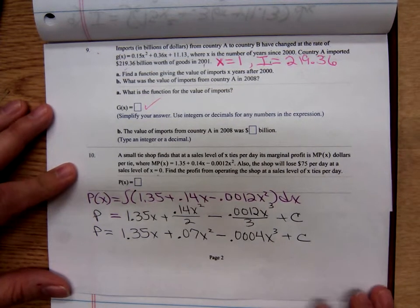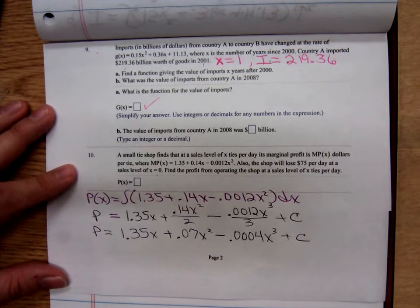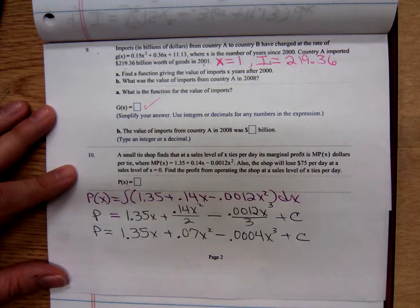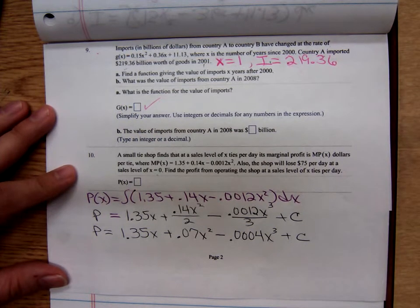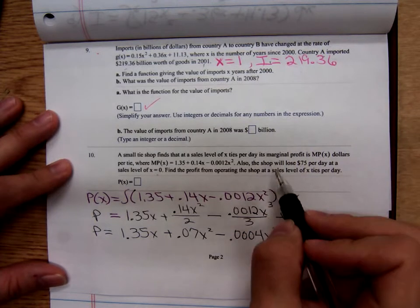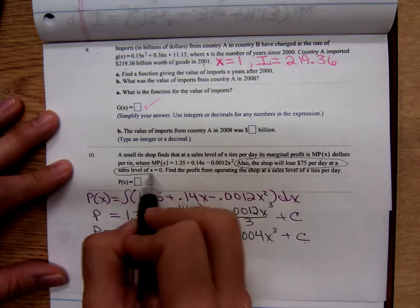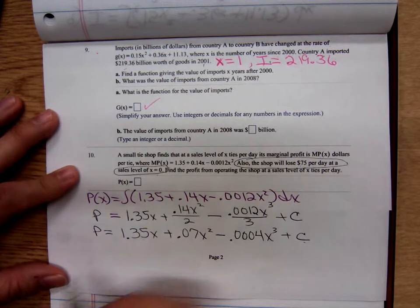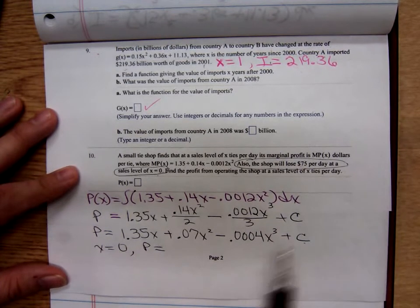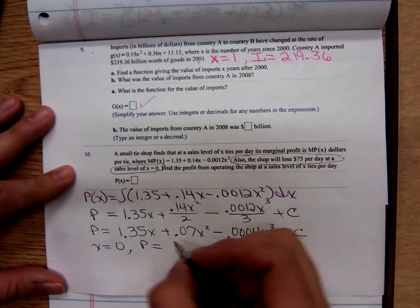And once again, you don't want to go tell your boss that the profit is going to be $10,000 plus C. C could be 40 or C could be negative 40 million. So you got to be able to find that constant of integration. Look back at this statement. They'll lose $75 a day at a level of 0. So when x equals 0, what's P? They're losing $75, so P is negative 75.